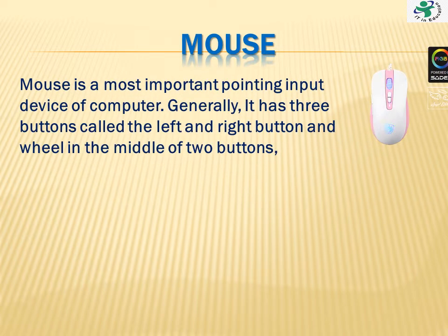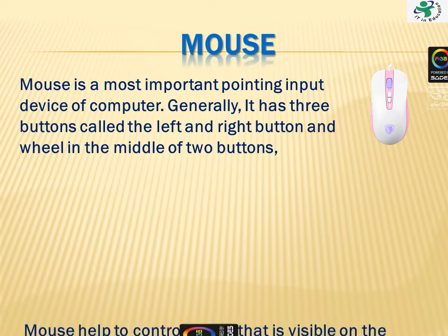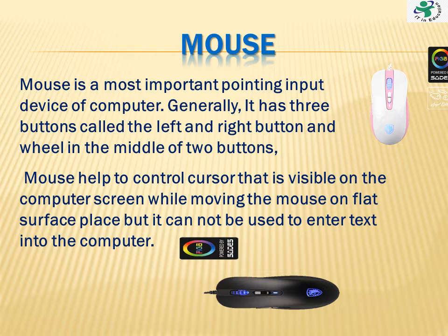Mouse. Mouse is the most important input device of the computer. Generally it has three buttons called the left and right button, and a wheel in the middle of the buttons. Mouse helps to control the cursor that is visible on the computer screen while moving the mouse on a flat surface, but it cannot be used to enter text into the computer.